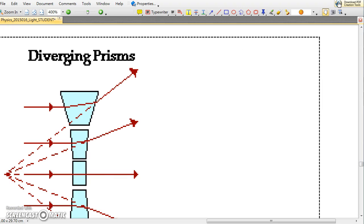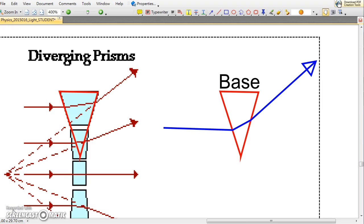Similarly, for the diverging lens on the right-hand side, there is also a prism. And when a light ray travels parallel to the principal axis, it would be refracted also towards its base again.